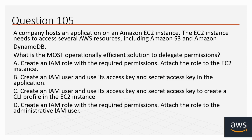Question number 105: A company hosts an application on an Amazon EC2 instance. The EC2 instance needs to access several AWS resources including Amazon S3 and Amazon DynamoDB. What is the most operationally efficient solution to delegate permissions? Options: A. Create an IAM role with the required permissions and attach the role to the EC2 instance. B. Create an IAM user and use its access key and secret access key in the application. C. Create an IAM user and use its credentials to create a CLI profile in the EC2 instance. D. Create an IAM role and attach it to the administrative IAM user. The correct option is A.